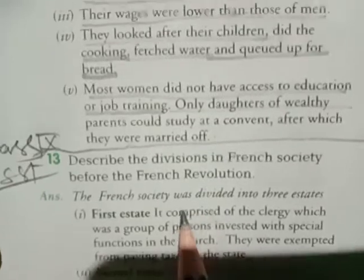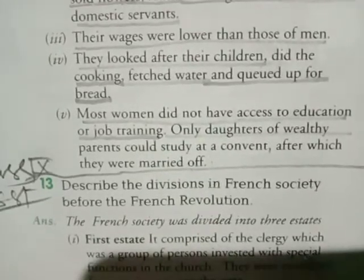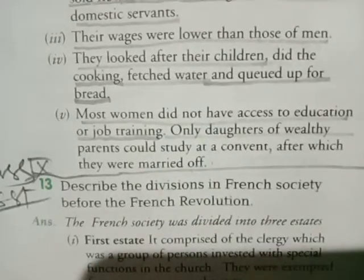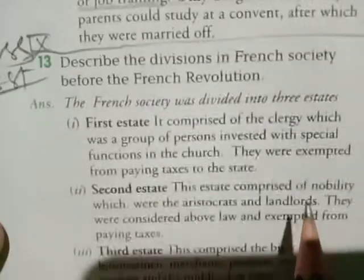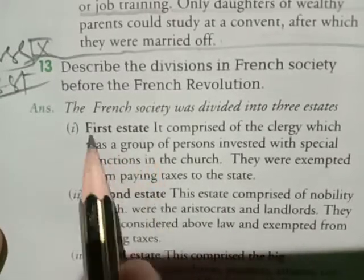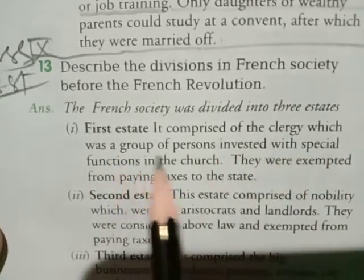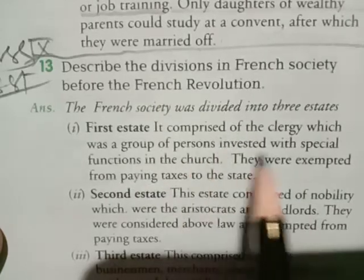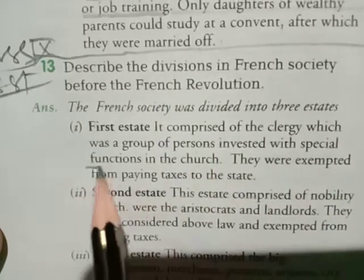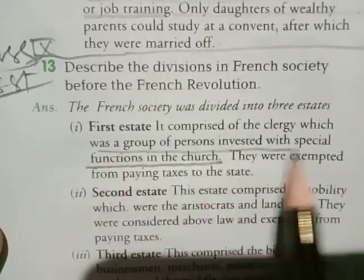The French society was divided into three states. France ka samaj three states mein bata hua tha. The first state comprises of the clergy, which was a group of persons invested in special functions in the church.